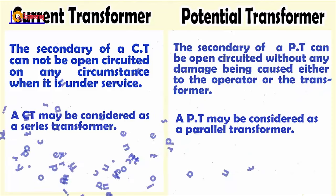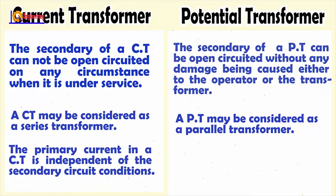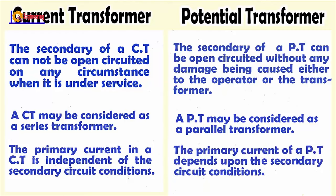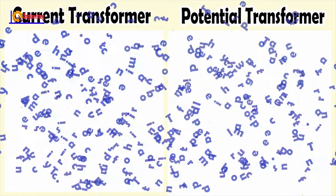The primary current in a current transformer is independent of the secondary circuit conditions. The primary current of a potential transformer depends upon the secondary circuit conditions.